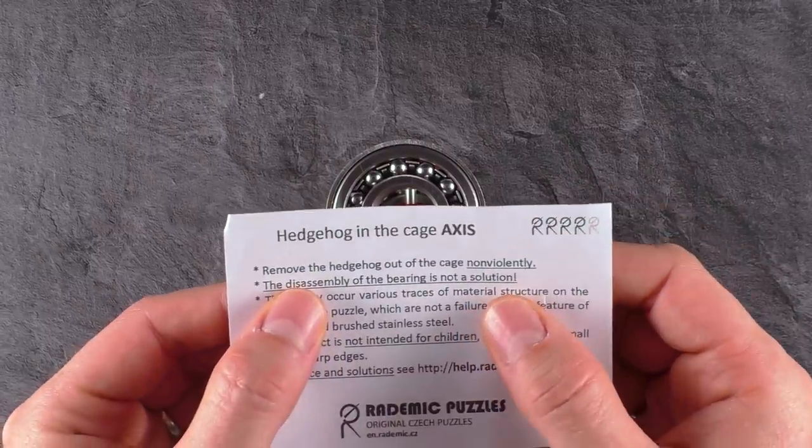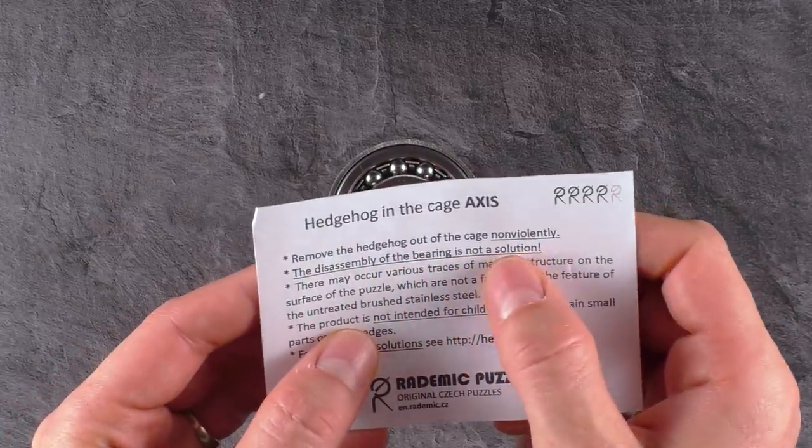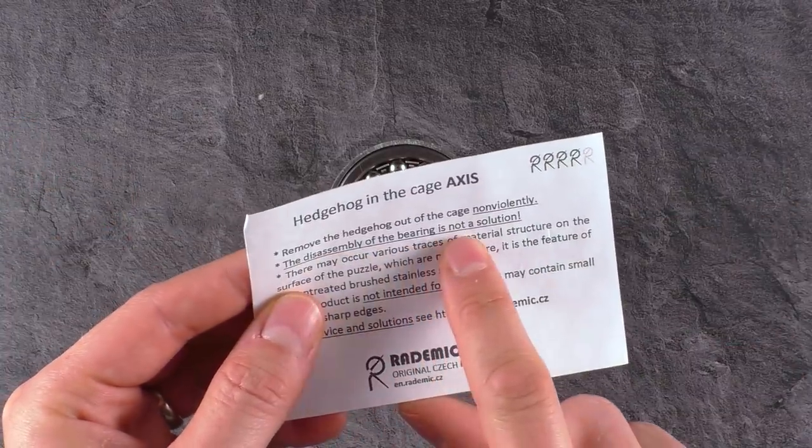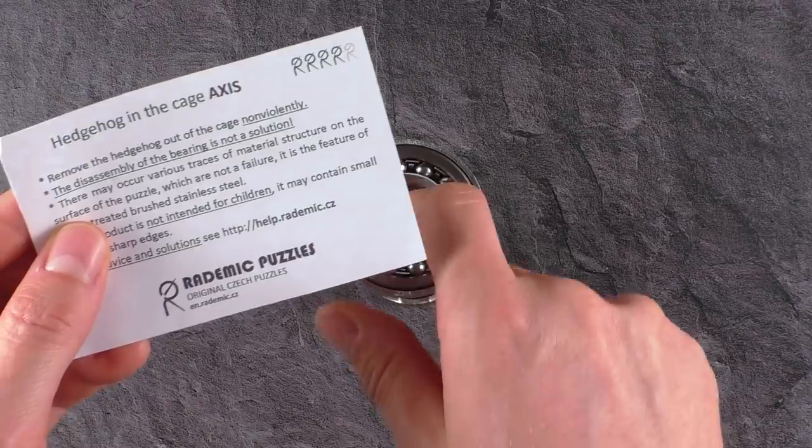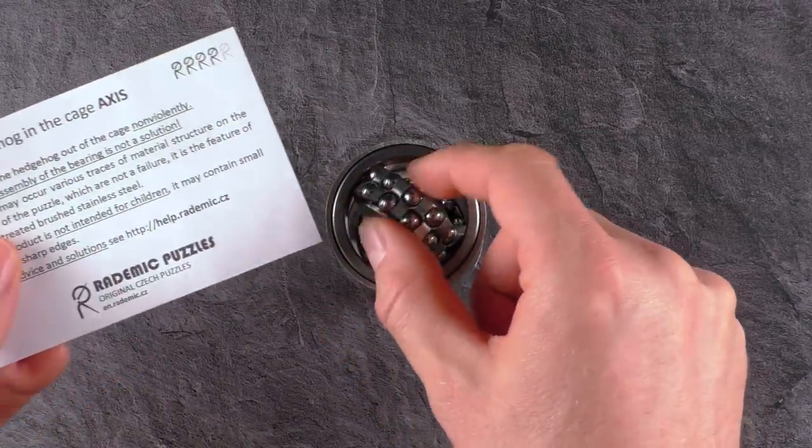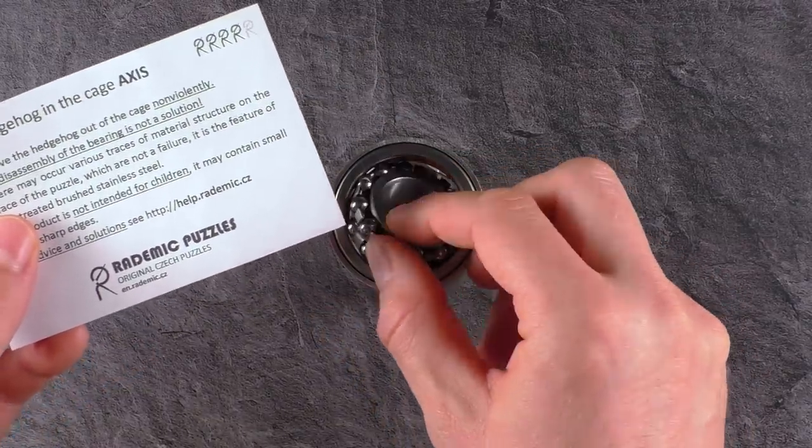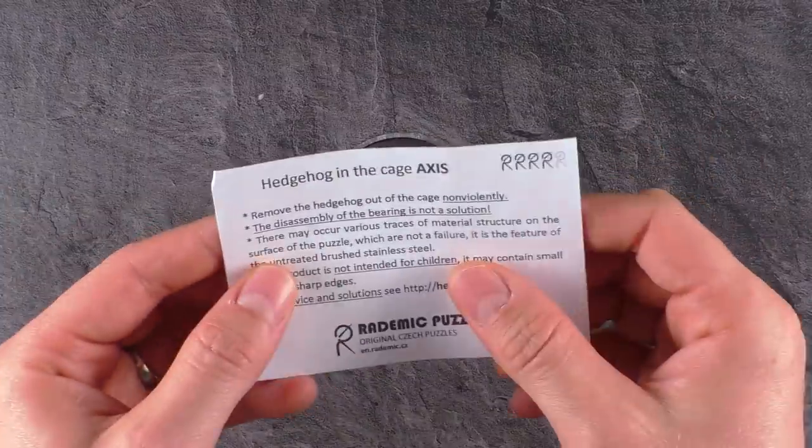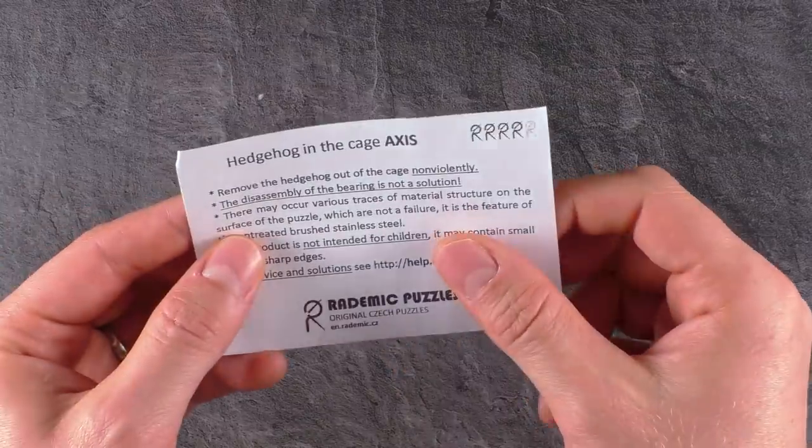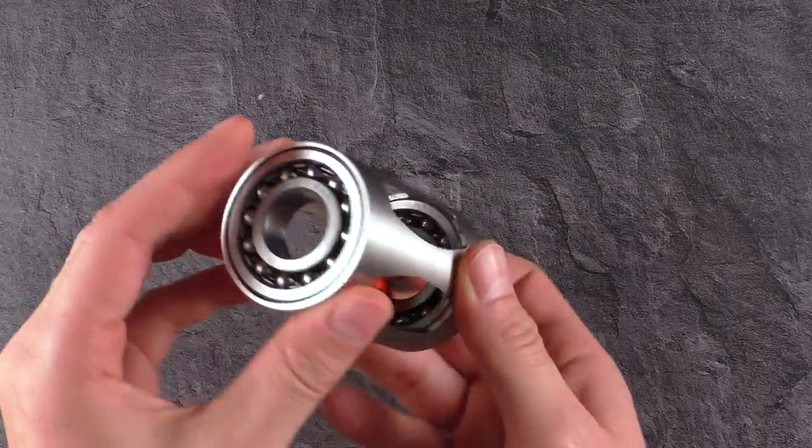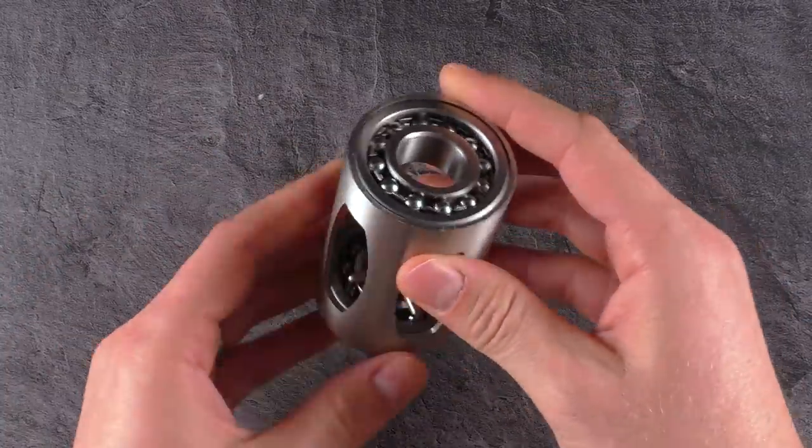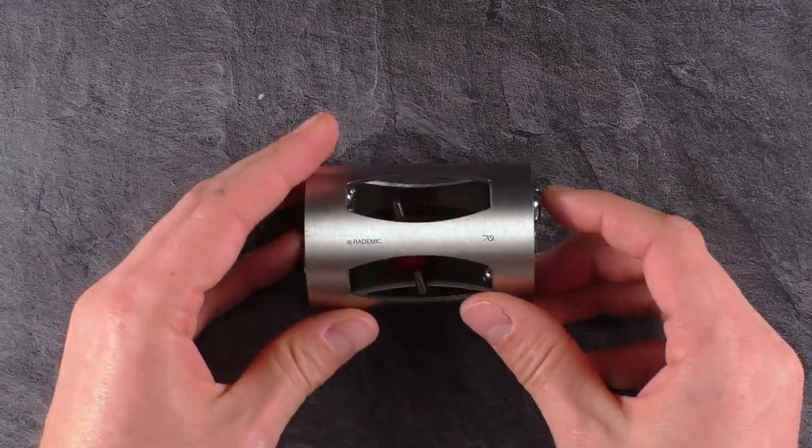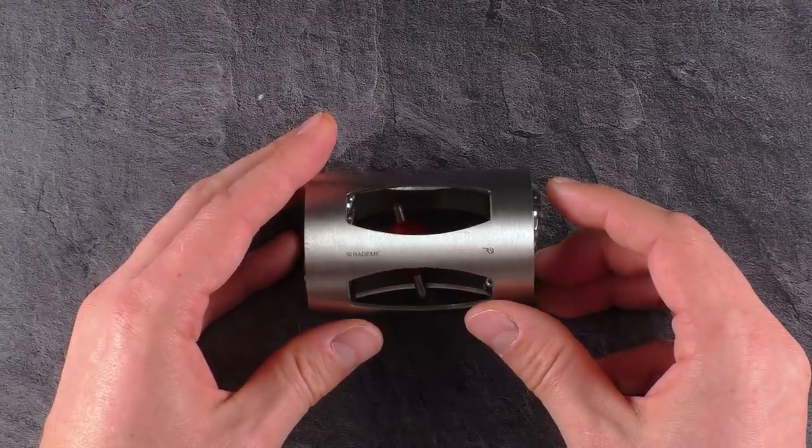And it comes also with some rules here, that say, remove the hedgehog out of the cage non-violently. Okay, I think that's clear. The disassembly of the bearing is not a solution, so if we are able to do it, this is not the solution. We need to get the ball out without disassembling any of these two bearings. I will try to solve this thing after the spoiler break, so let's just have a closer look now on this insanely looking beautiful puzzle.